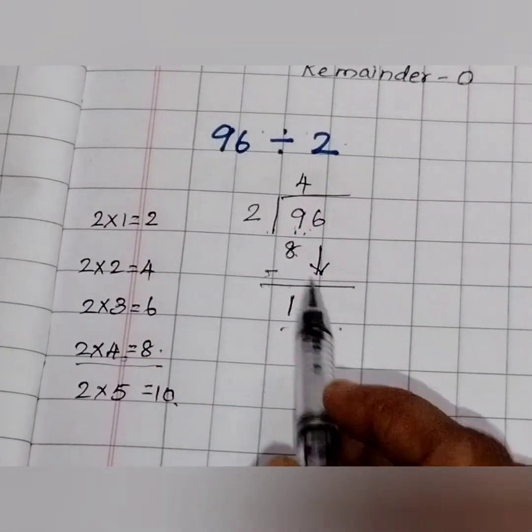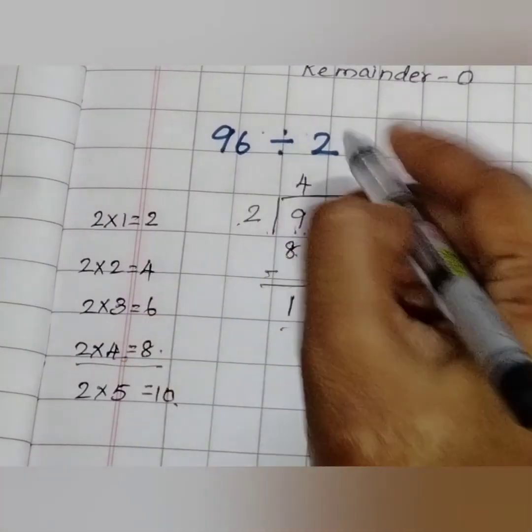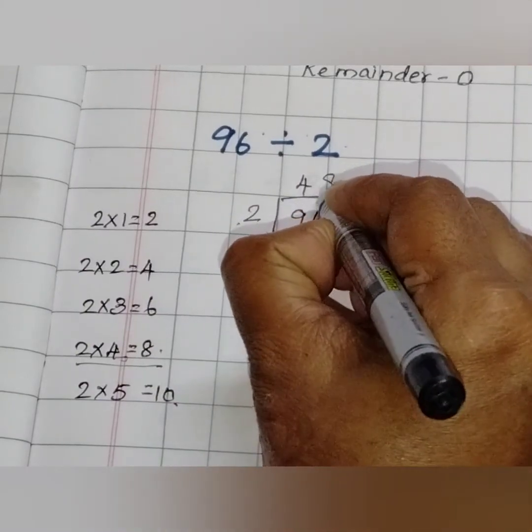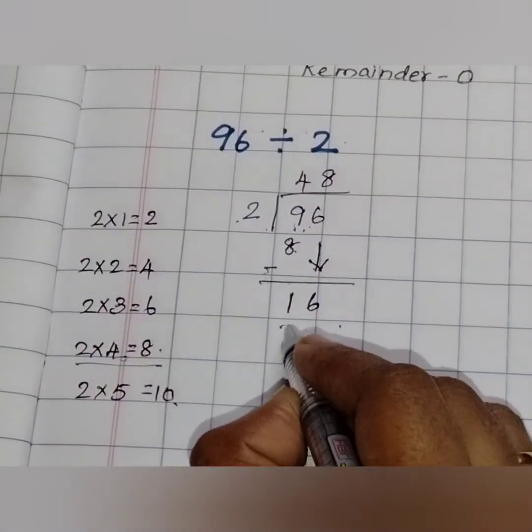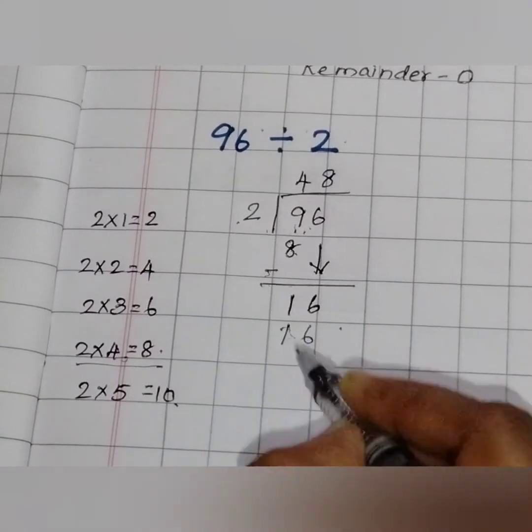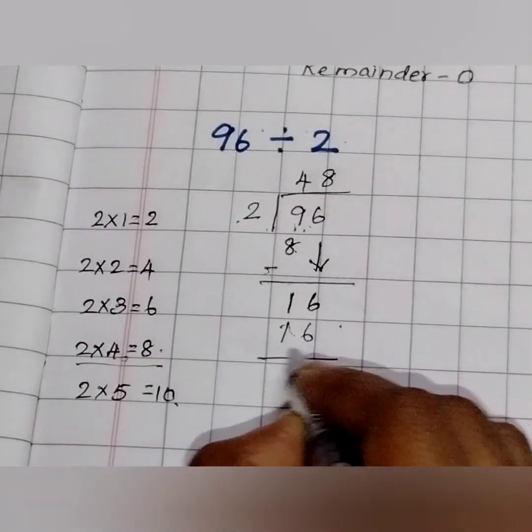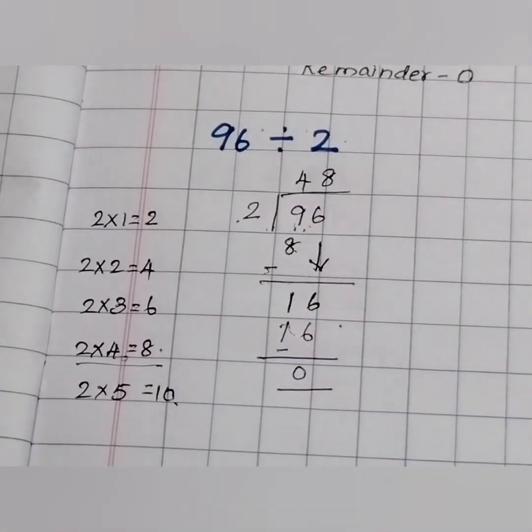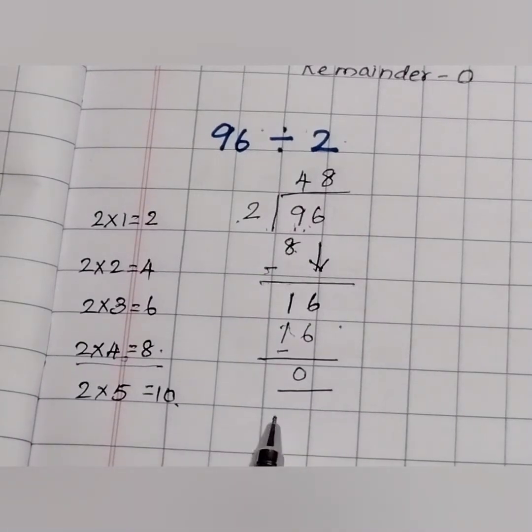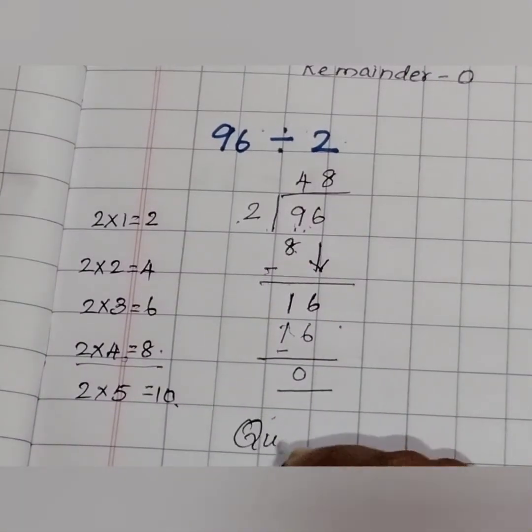So now what happened? It became 16. When 16 comes, it is 2 eights are 16. What is the quotient? Quotient is 48. And remainder is 0.